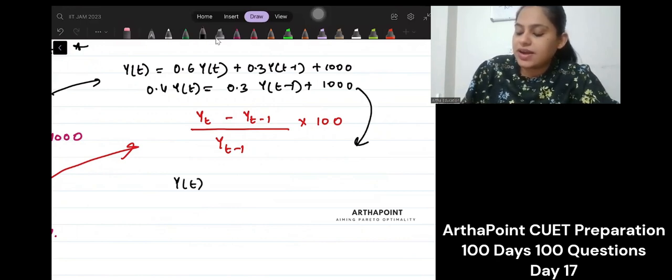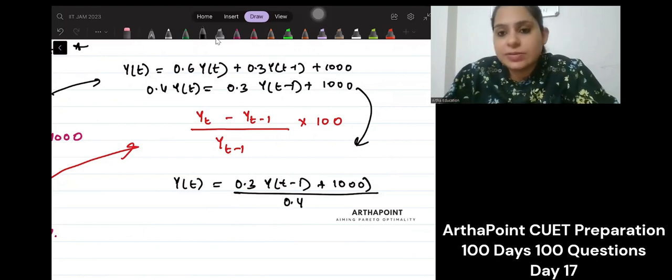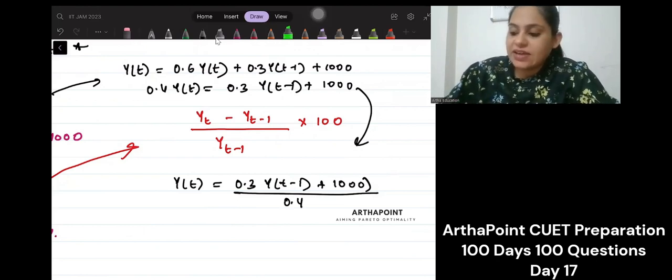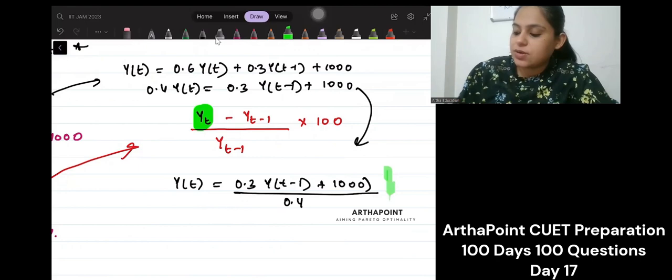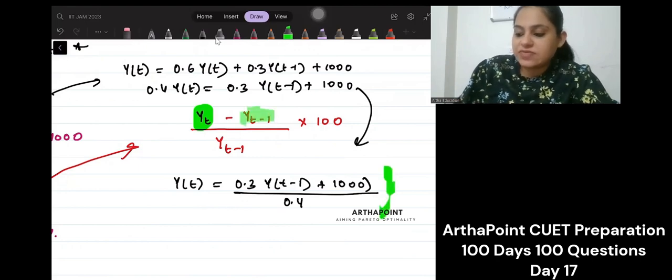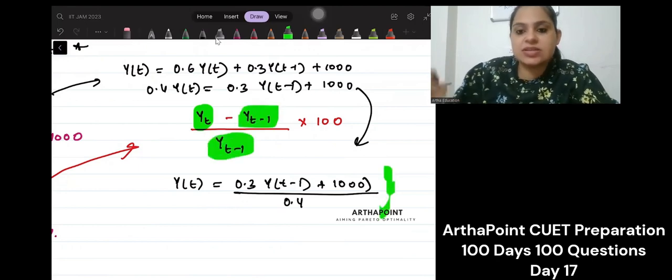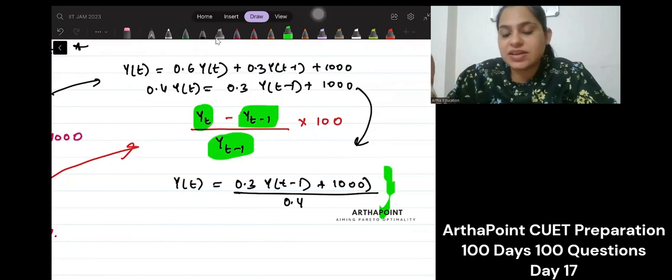Divided by 0.4, Y(t) is equal to 0.4Y(t-1). So Y(t) I have got in terms of Y(t-1). Y(t-1) is here. Here is Y(t-1). So I will have Y(t-1) everywhere.